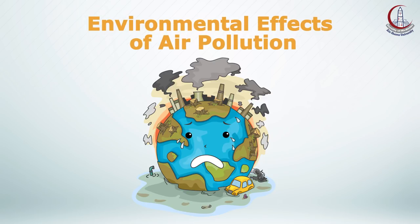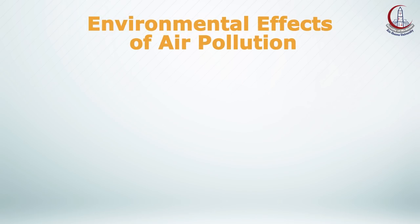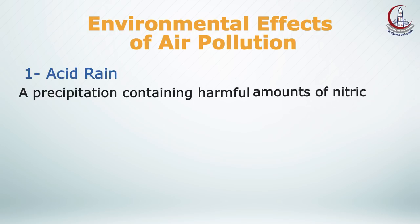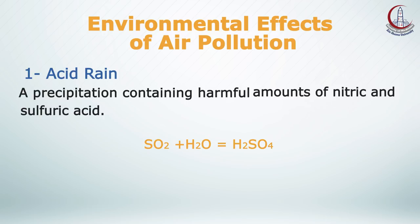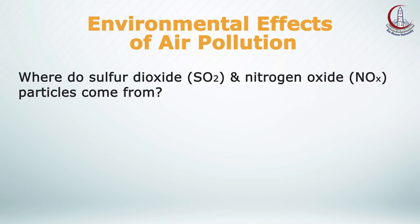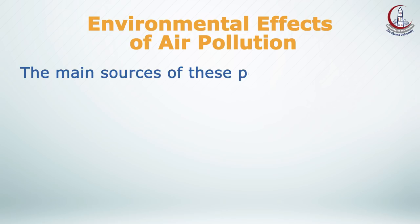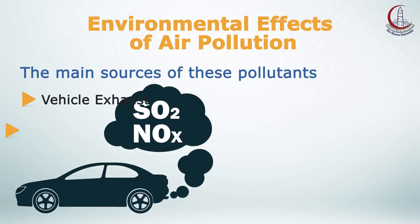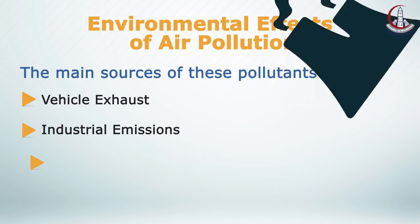Air pollution also affects the environment. Environmental effects include acid rain or acid deposition, which is precipitation containing harmful amounts of nitric and sulfuric acids. It occurs when emissions of sulfur dioxide and nitrogen oxides in the atmosphere react with water, oxygen, and oxides to form acidic compounds. The main sources of these pollutants are vehicle exhaust, industrial emissions, and power generating plants.